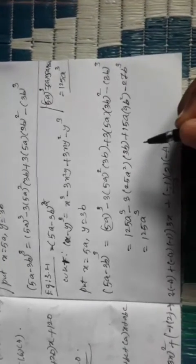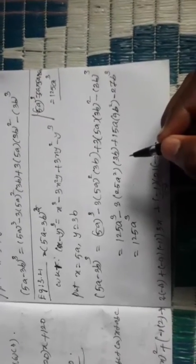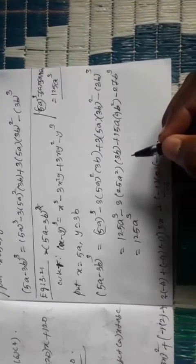(3b)² means 3b squared: 3² = 9, so (3b)² = 9b². For the third term, 3 × 5a × 9b² = 135ab². For the fourth term, (3b)³ = 27b³. Now multiplying: 3 × 25 = 75, and 75 × 3 = 225, confirming the coefficient 225.